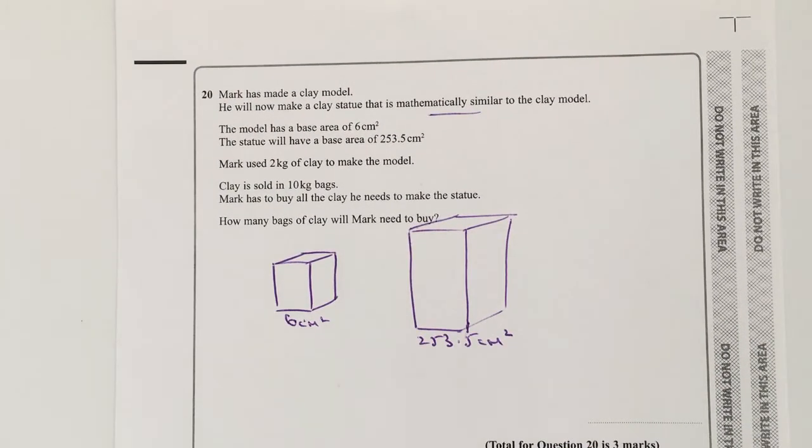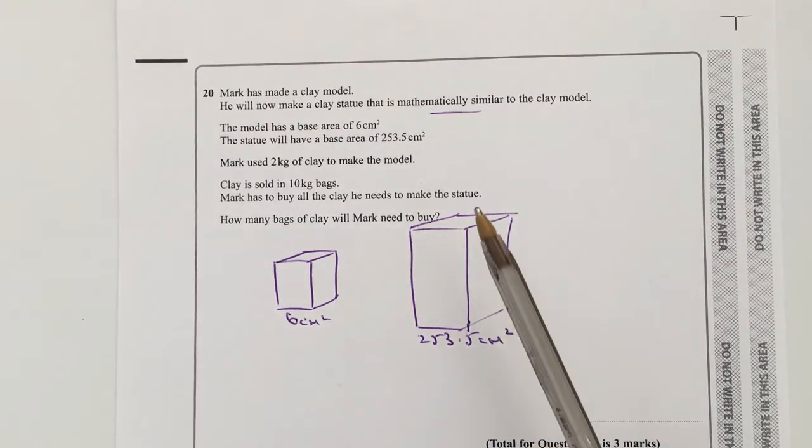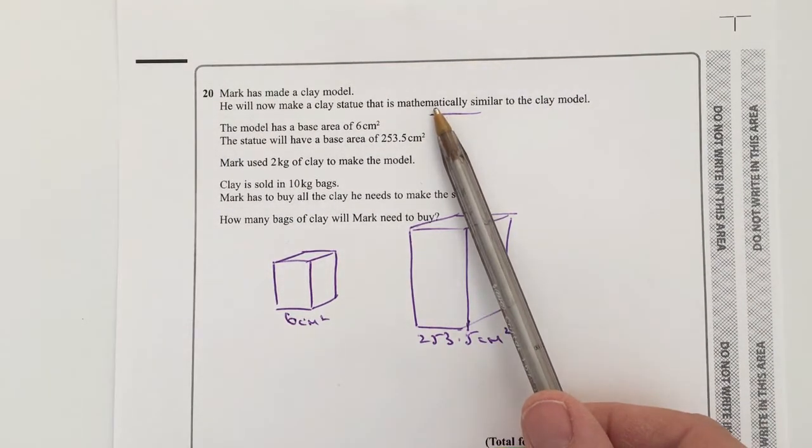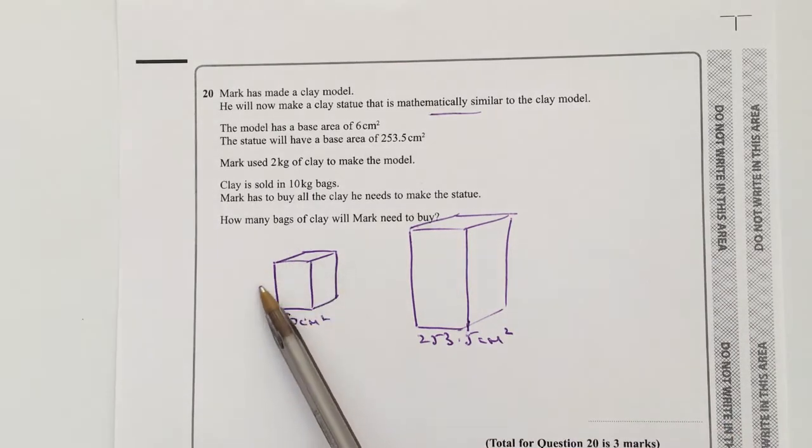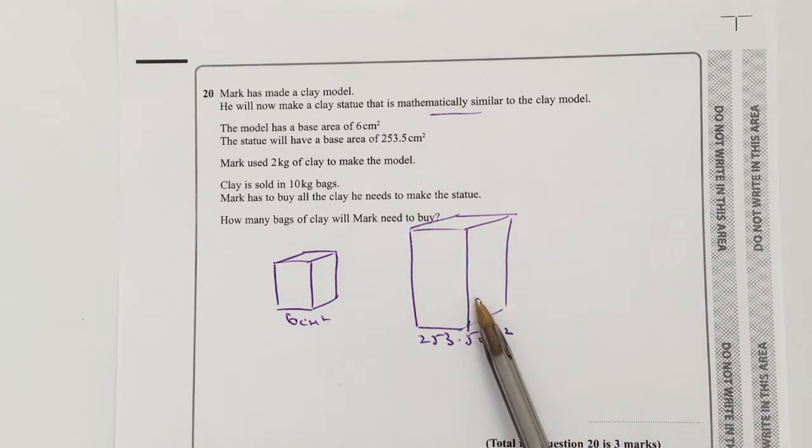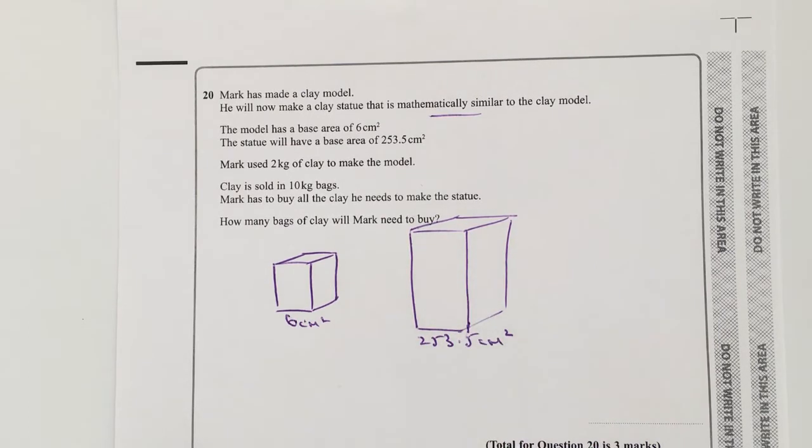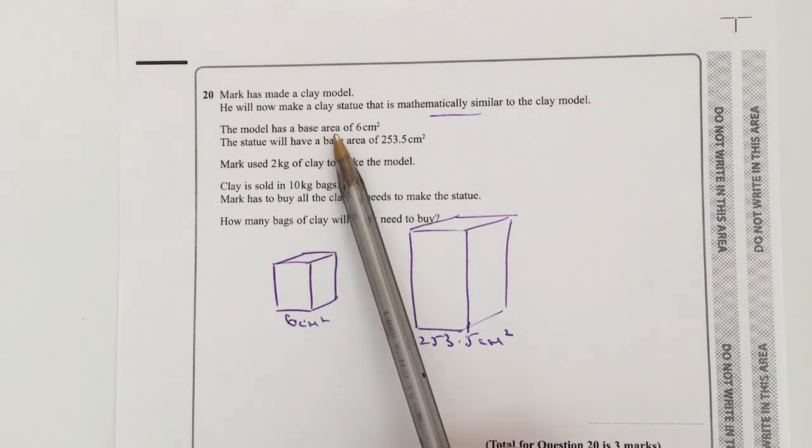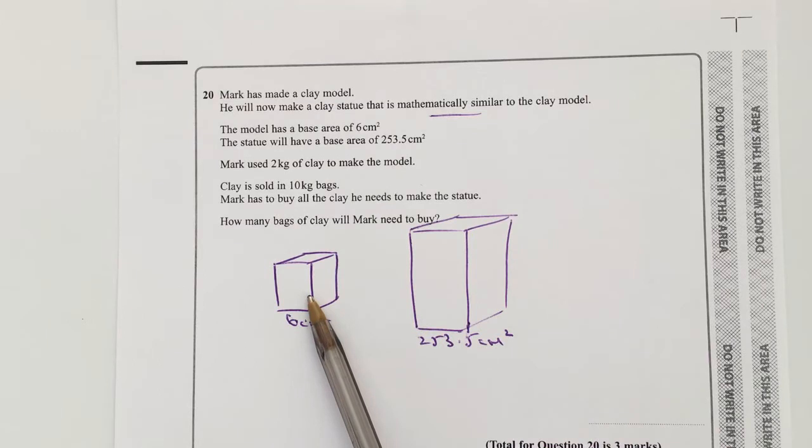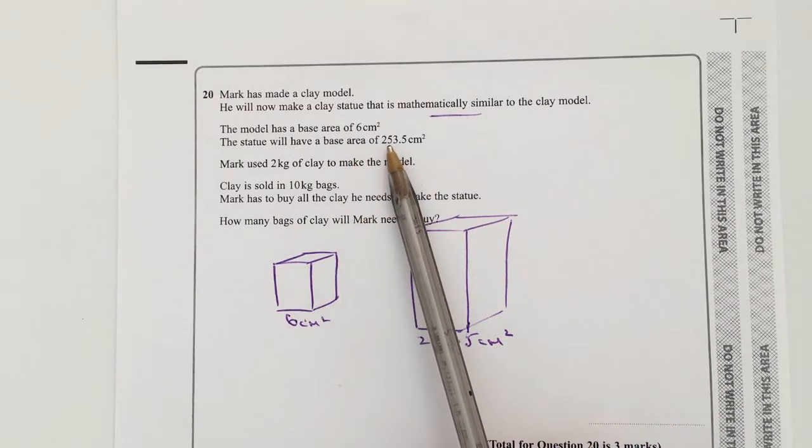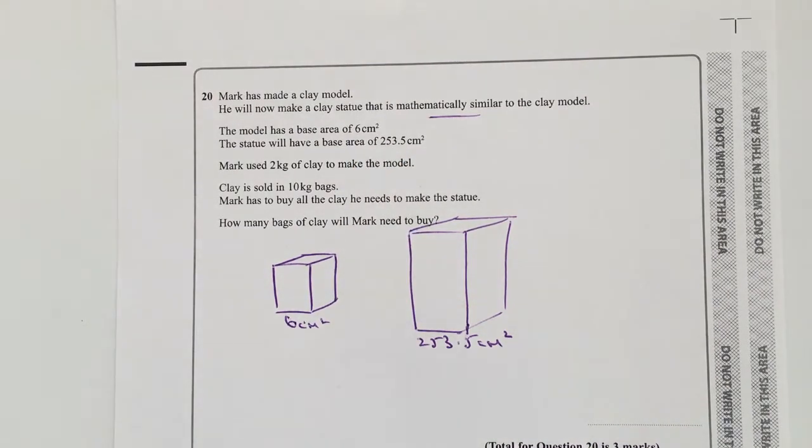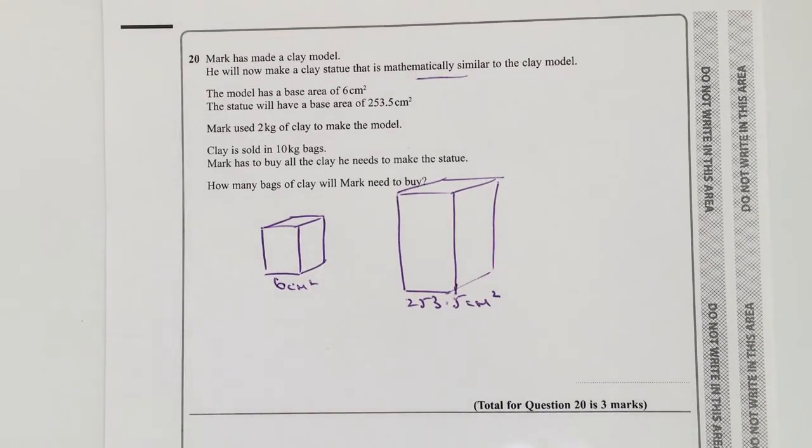Question 20 deals with mathematically similar products, and that's the key phrase. This particular shape is going to be exactly the same or mathematically similar to this shape, it's just going to be slightly bigger. The information that we're given is that we've got a base area of 6 on the model and then the statue has got a base area of 253.5, so really what that tells us is it allows us to work out the constant of proportionality.